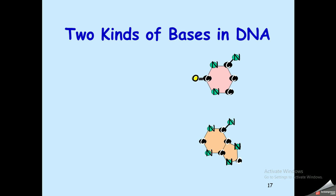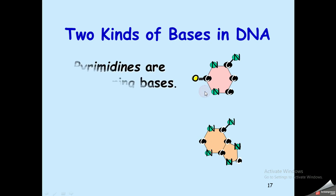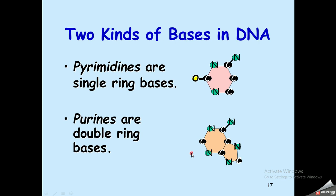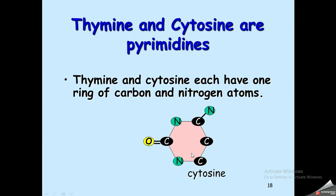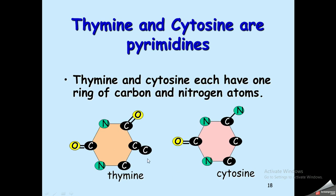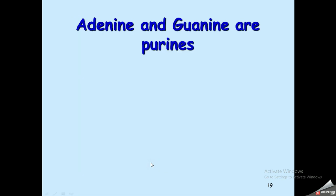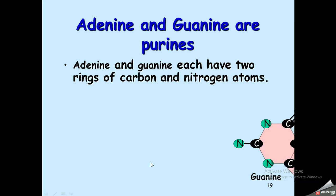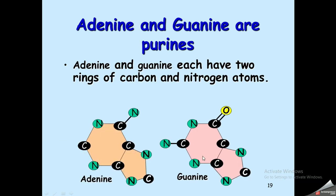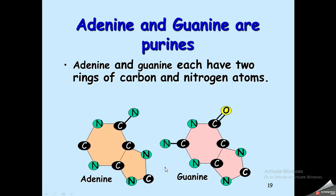These four nitrogenous bases are of two kinds. The first kind is single-ring bases called pyrimidines, and the second kind is double-ring bases called purines. Thymine and cytosine are pyrimidines (single ring), while adenine and guanine are purines (double ring).